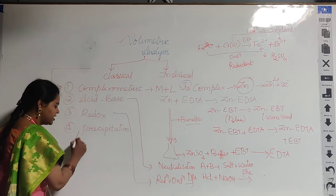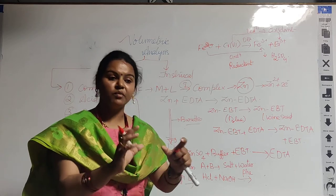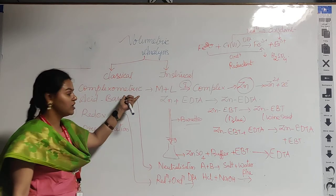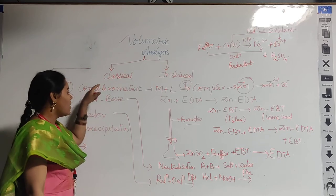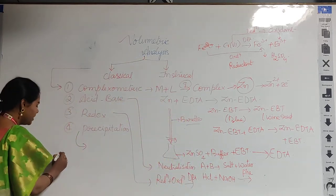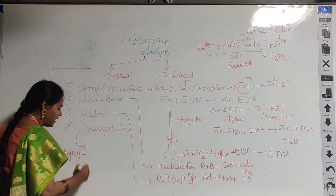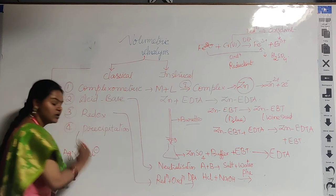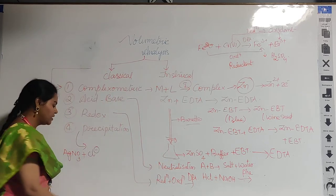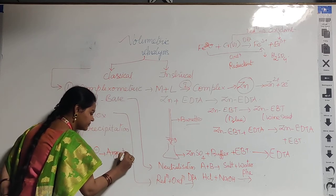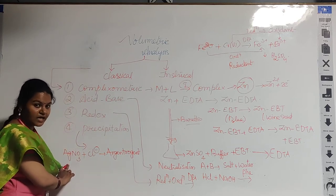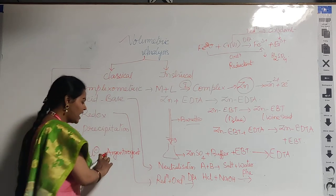The fourth type is precipitation titration. At its endpoint, a precipitate is formed. Precipitation titration may follow complexometric, acid-base, or redox pathways — all these combinations can give precipitation. For example, silver nitrate is titrated against a chloride such as NaCl or HCl. These reactions are named argentometric titrations, because silver's Latin name is Argentinium.